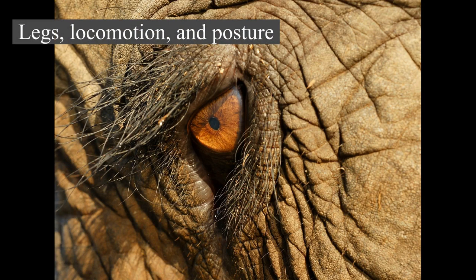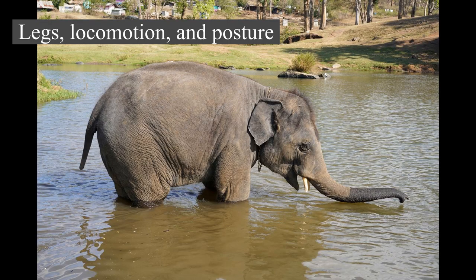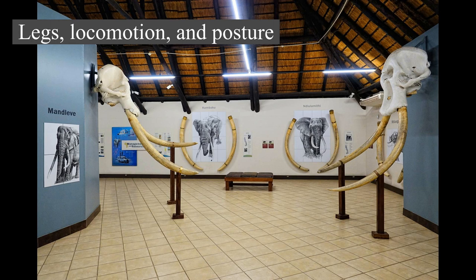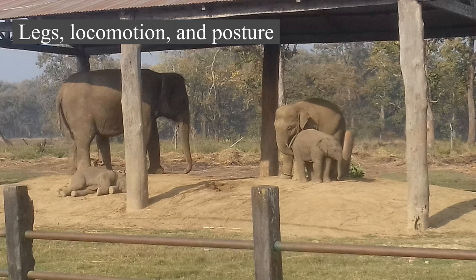Legs, locomotion, and posture: To support the animal's weight, an elephant's limbs are positioned more vertically under the body than in most other mammals. The long bones of the limbs have cancellous bone in place of medullary cavities, strengthening the bones while still allowing hematopoiesis. Both the front and hind limbs can support an elephant's weight, although 60% is borne by the front. Since the limb bones are placed on top of each other and under the body, an elephant can stand still for long periods of time without using much energy. Elephants are incapable of rotating their front legs as the ulna and radius are fixed in pronation.